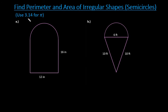For these, we are going to use 3.14 for pi rather than using the pi button on the calculator. Just make sure that if you use the pi button your calculator will give you a slightly different answer. The pi button gives a more exact answer; 3.14 gives a more approximate answer. It's kind of just a matter of preference — make sure you look at your directions. If it doesn't specify, you can probably do it either way.